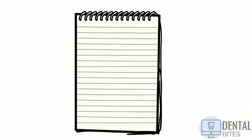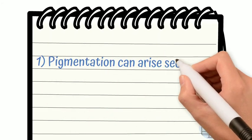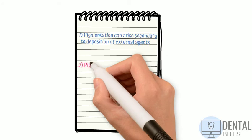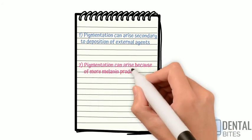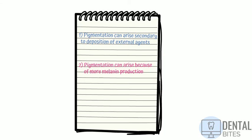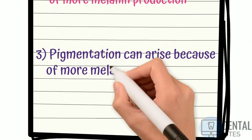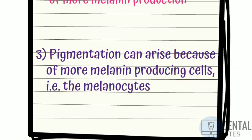Let's start by breaking up the different types of oral pigmented lesions by their possible causes. Number one: pigmentation can arise secondary to deposition of external agents, for example an amalgam tattoo. Number two: pigmentation can arise because of more melanin production. Number three: pigmentation can arise because of more melanin producing cells, i.e. the melanocytes. These are specialized pigment producing cells present in the basal cell layer of the mucous membranes and skin.